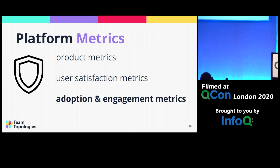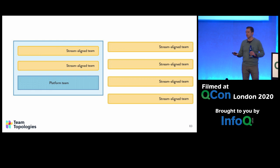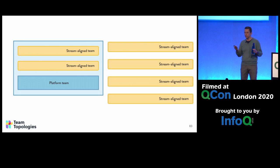Another type of metric is adoption and engagement. In the end, for the platform to be successful it needs to be adopted — that means it's serving its purpose. We can look at how many teams are on board versus not. Then per platform service, how much engagement is there — how many teams are using each particular platform functionality. That gives us hints about what worked well and what didn't, and why. What did we do differently that caused two platform services to have very different engagement metrics?